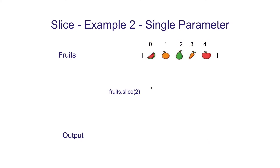In example 2, we will use slice with only the start parameter. We have the input array with 5 fruits and we are calling slice with the single parameter 2. This means we want a subarray from starting position 2 till the end. So when we have a start index and want the array till the end, we can use slice with a single parameter.